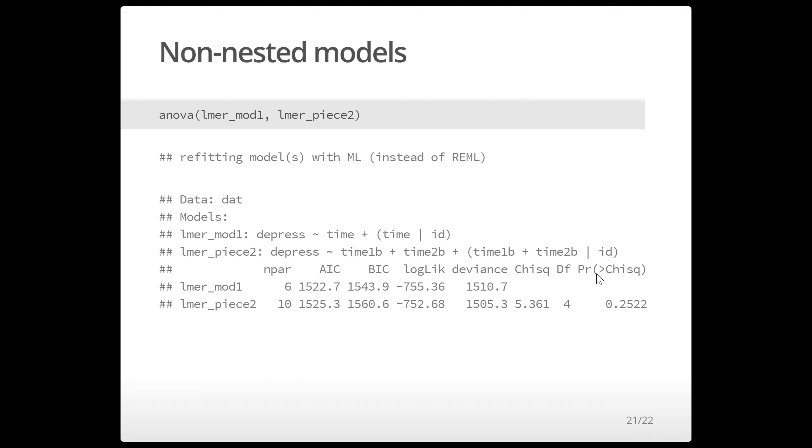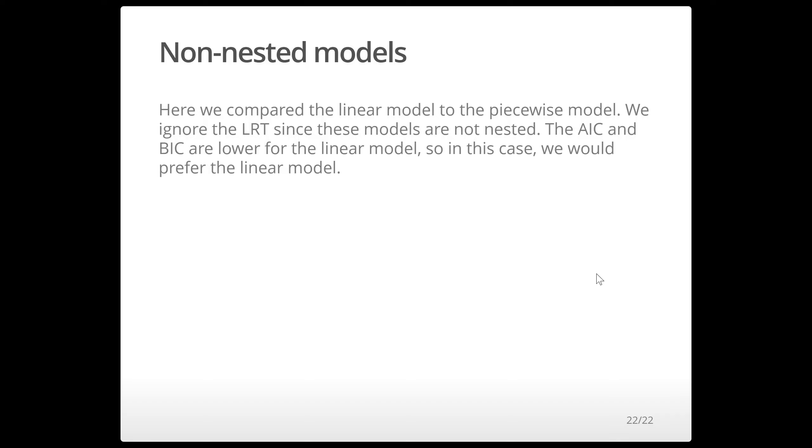But what that means is the linear model is no longer a special case of the piecewise model and so we can't interpret the likelihood ratio test directly here. But we can interpret the AIC and BIC and what we see is that the AIC and BIC are both lower for the linear model. That tells us that in this case we prefer the linear model.